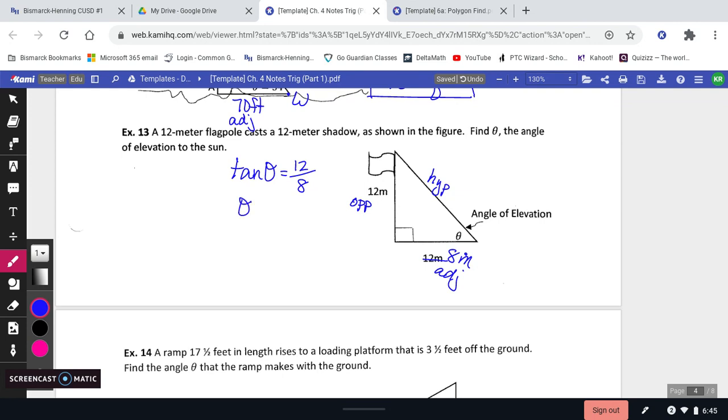To work backwards to find the angle measure, you're going to go inverse tangent of 12 eighths, and theta is going to be, hold on a second, I did not write this one down in my notes. Okay, so inverse tangent of 12 eighths is 56.3 degrees.